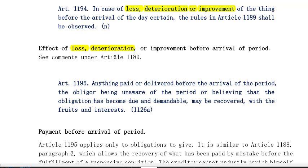When it comes to improvement of the thing under Article 1189, if by the nature and time there has been an improvement before the arrival of the period, it will inure to the benefit of the creditor. If the improvement was made at the expense of the debtor, the debtor's right is that granted only to that of a usufructuary.